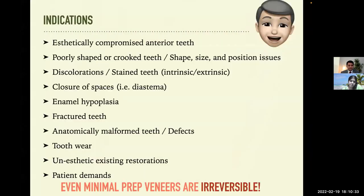Let's have a look at the indications. For aesthetically compromised anterior teeth or poorly shaped teeth, we can change the shape. For discolored or stained teeth, we can modify the shade of the tooth. If shade is the only concern, we should consider whitening without altering the teeth. We can alter the length of the tooth, close spaces like diastema, restore fractured teeth or tooth wear, address unesthetic existing restorations on patient demand, and in certain cases restore the alignment of the teeth as well if they don't want braces. Remember, even minimum preparation veneers are irreversible.